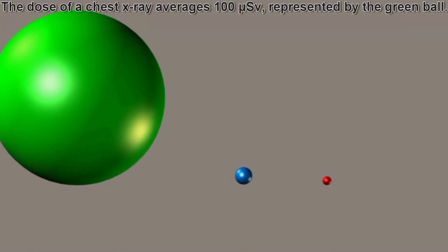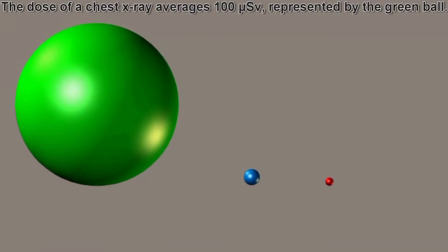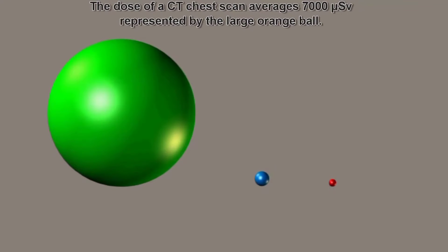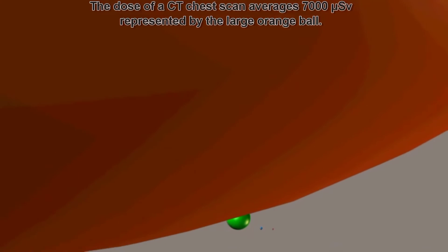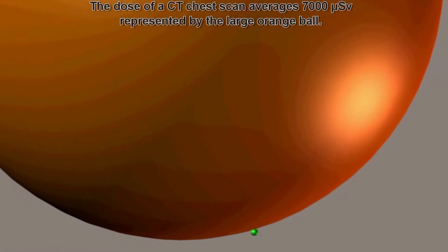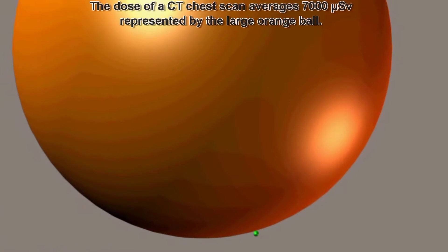The dose of a chest x-ray is about 100 microsieverts. That's represented by the green ball. The dose of a CT chest scan averages about 7,000 microsieverts. That's represented by the large orange ball. Notice how it dwarfs everything else.